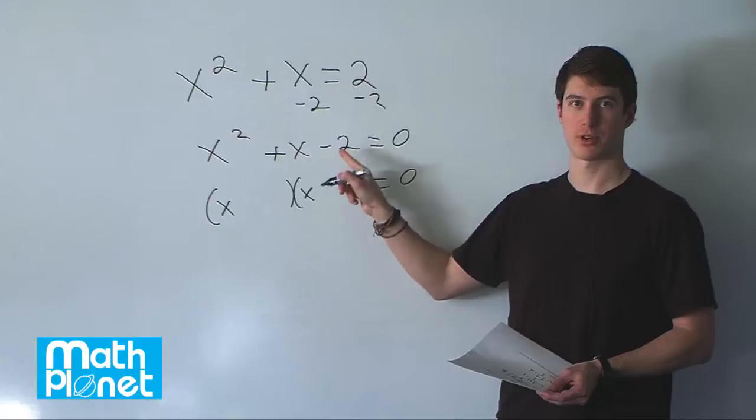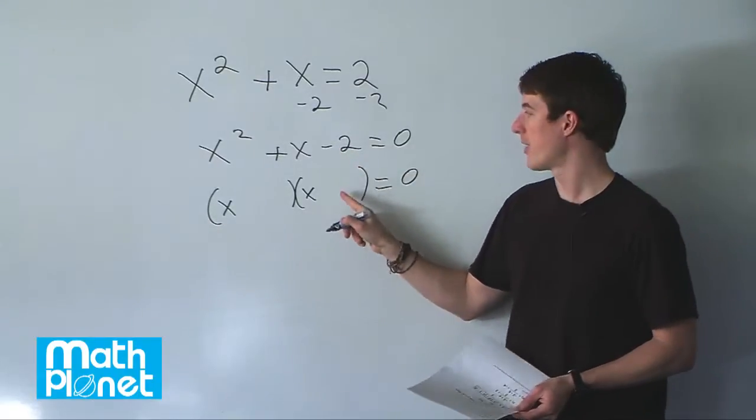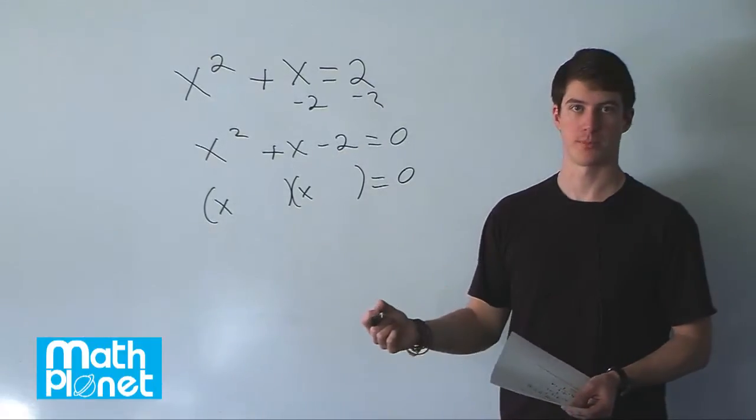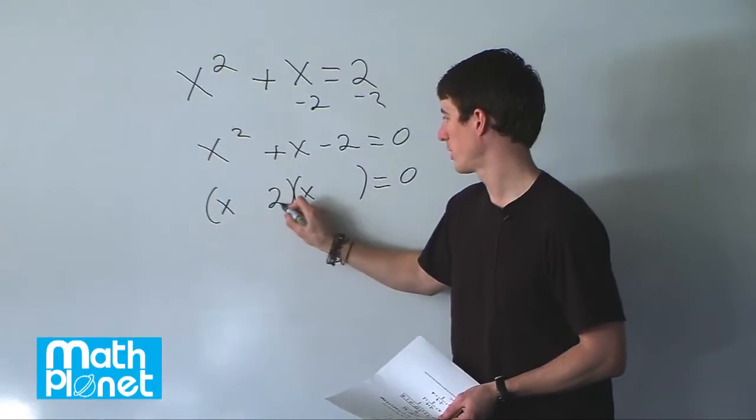Then we need to look at this numbers term, factorize that, and then plug that in here. The factors of two are only two and one. We have to have two and one here.